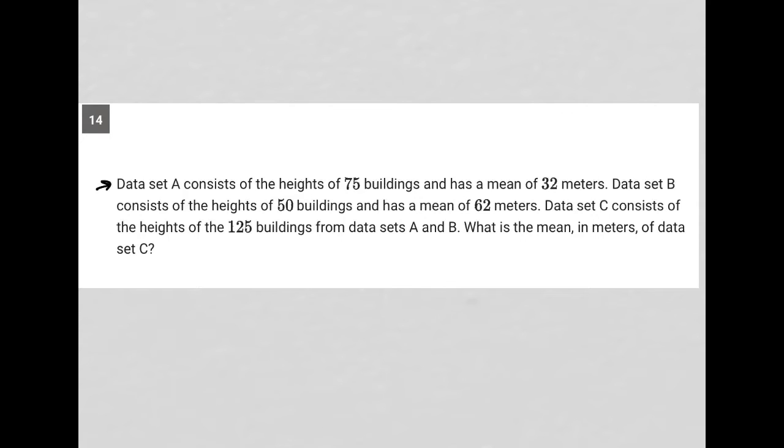This question says data set A consists of the heights of 75 buildings and has a mean of 32 meters. So within data set A, I actually have 75 data points—75 buildings—and the mean of those 75 is 32.